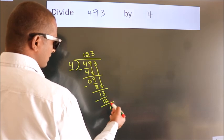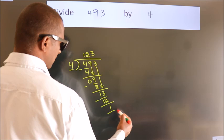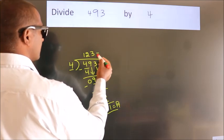After this, no more numbers to bring it down. So, we stop here. This is our remainder. This is our quotient.